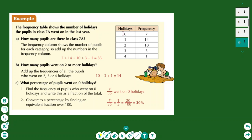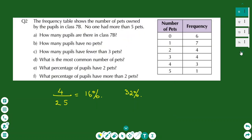To find what percentage went on zero holidays: the frequency for zero is 7, and the total frequency is 35. So 7 out of 35 simplifies to 1 over 5, and to convert to a percentage I multiply by 20, giving 20%. This is how you answer questions from frequency tables once you understand how to complete them.